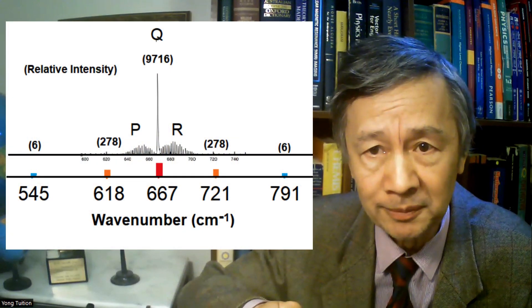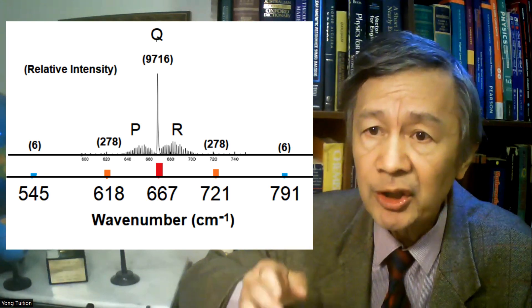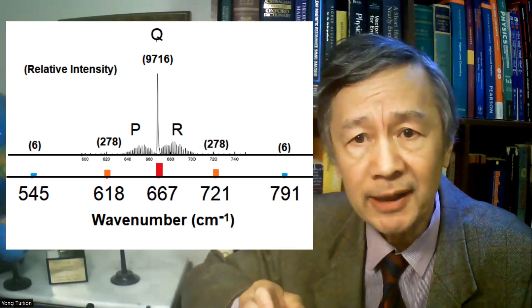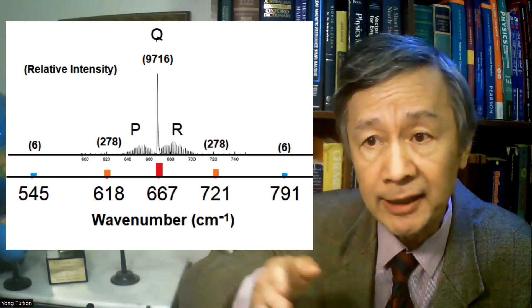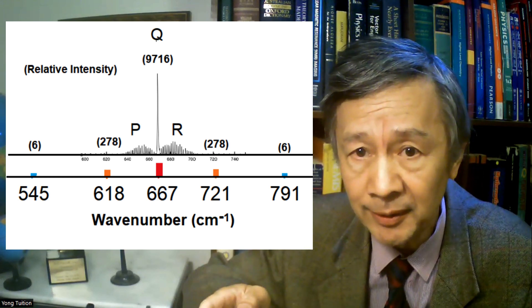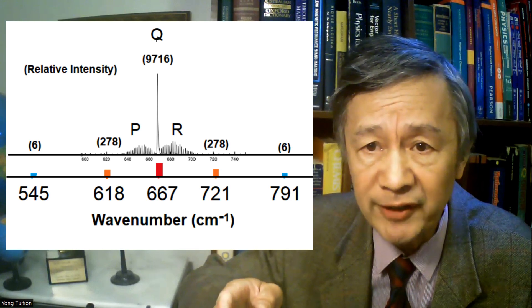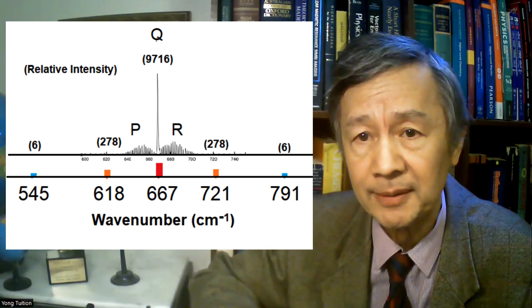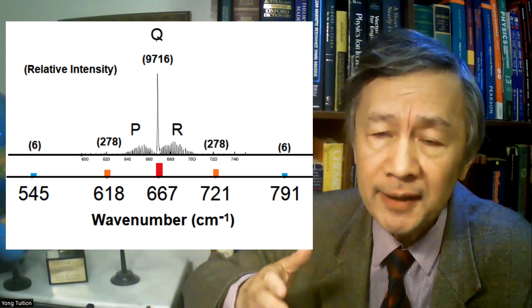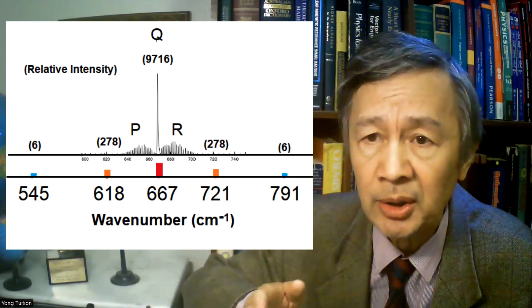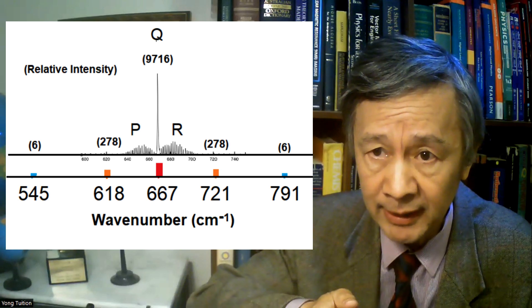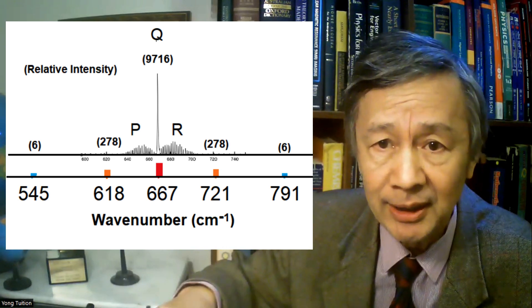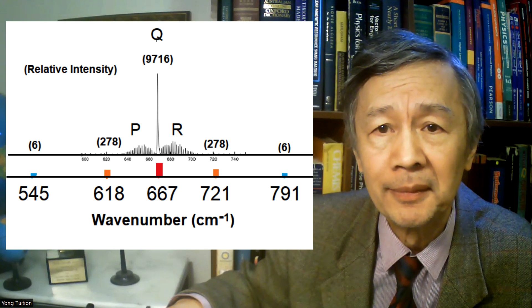Apparently, the CO2 absorption distribution is far from uniform. Based on this fact, it could be argued that over 99% of the infrared absorption occurs between 618 and 721 per centimeter, even if CO2 concentration increases by 100 times. This implies that it is incorrect to expect the wings beyond the first pair of the stick-like peaks can block more upward infrared radiation.